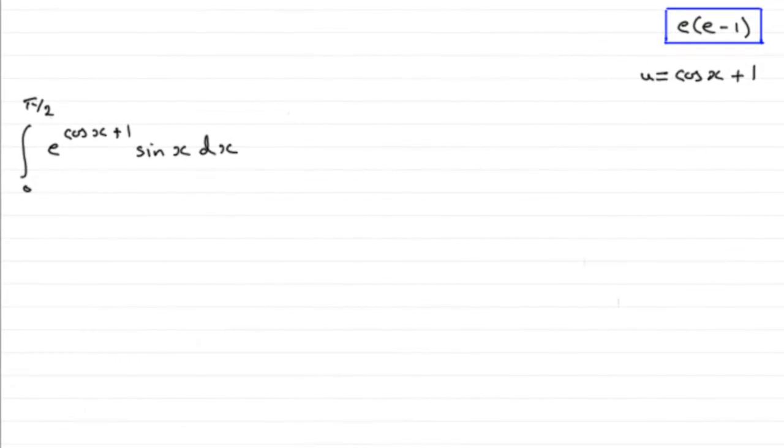Now this question. We're asked to use this substitution u equals cos x plus 1, or otherwise, to show that this integral here going from 0 to π/2 of e to the power cos x plus 1 times sine x, integrated with respect to x, comes to exactly e times (e minus 1).